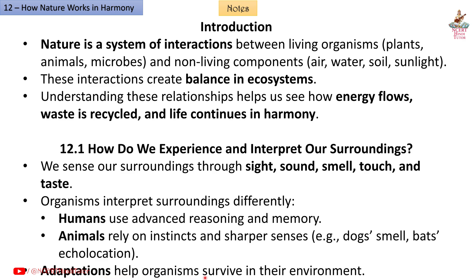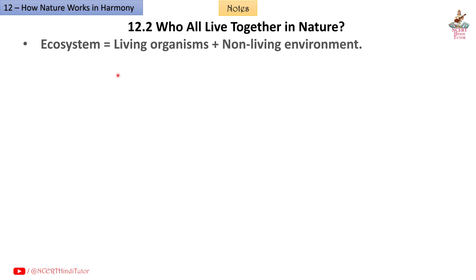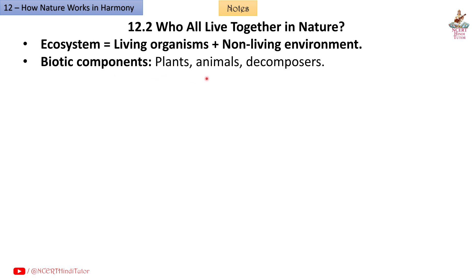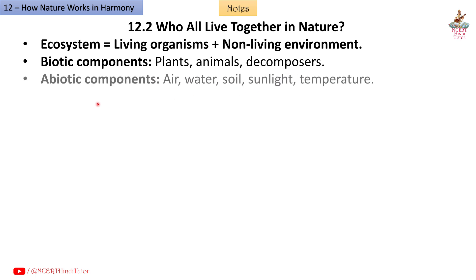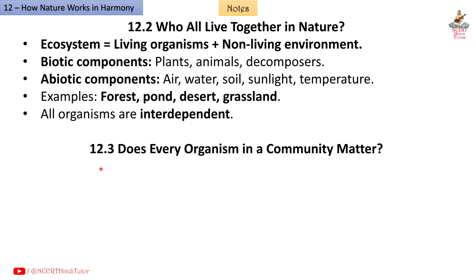Adaptations help organisms survive in their environment. 12.2: Who all live together in nature? An ecosystem equals living organisms plus non-living environment. Biotic components: plants, animals, decomposers. Abiotic components: air, water, soil, sunlight, temperature. Examples: forest, pond, desert, grassland. All organisms are interdependent.